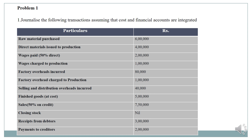Fourth transaction: wages charged to production — 1 lakh rupees. Wages charged to production activities are recorded in wages control account. Fifth transaction: factory overheads incurred — worth rupees 80,000. Factory overheads are recorded in factory overheads control account. Sixth transaction: factory overheads charged to production — 1 lakh, also recorded in factory overheads control account.